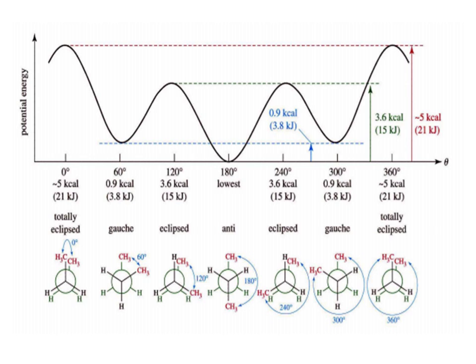When the dihedral angle between the methyl group of C3 and C2 is 60°, this conformation is called gauche. When the dihedral angle between the methyl group of C3 and C4 is 180°, this is the anti conformation. At 240° again an eclipsed conformation, at 300° a gauche conformation, and again at 360° a fully eclipsed conformation.